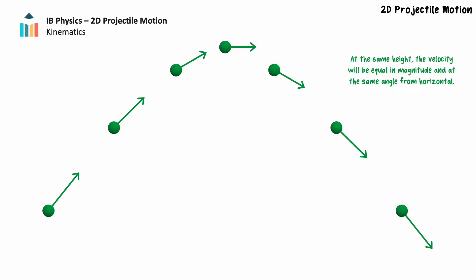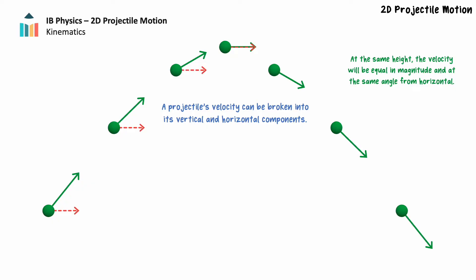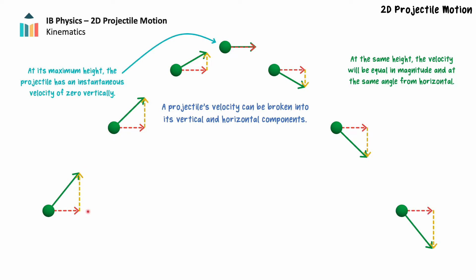Because these projectiles have both horizontal and vertical motion simultaneously, we can break the projectile's velocity into its components. We can see the horizontal velocity remains constant throughout the projectile's flight. The projectile's vertical velocity does not remain constant — it decreases as the projectile moves upward and increases as the projectile falls downward, because the projectile accelerates in this direction due to the force of gravity acting on it.